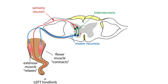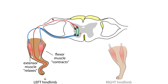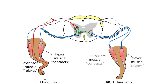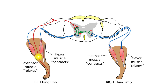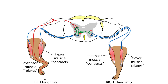This permits the dog to withdraw the limb from the painful stimulus. With withdrawal of one limb, the weight will shift to the limb on the other side of the body. Interneurons also connect to motor neurons on the opposite side of the spinal cord, so that the muscles in the other limb can adjust to the shift in weight distribution. In this case, note that it is the extensor muscle that contracts and the flexor muscle that relaxes.